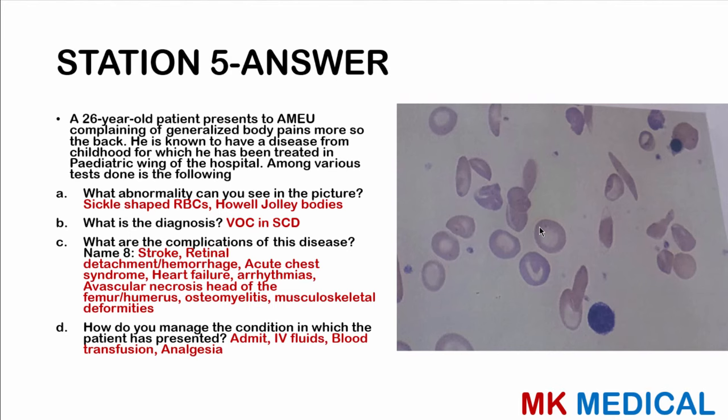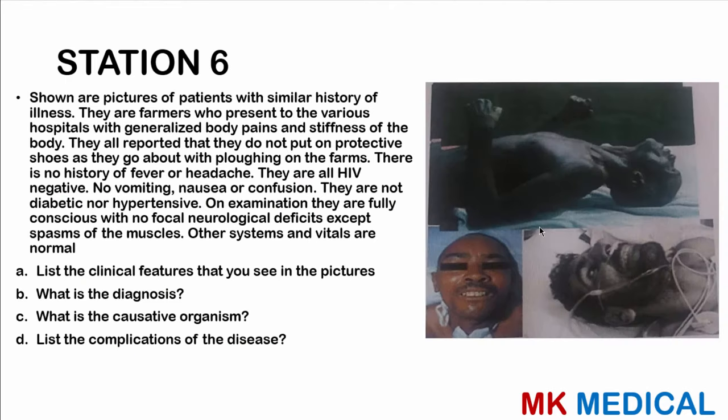How do you manage the vaso-occlusive crisis? Admit the patient, draw blood for investigations — full blood count and crossmatch — then transfuse the patient. Run some IV fluids, give analgesia, and cover them on broad-spectrum antibiotics.